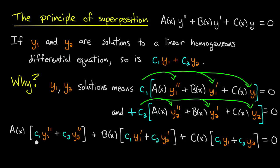So I'll have a times the linear combination of the second derivatives of y1 and y2, plus b times the linear combination of the first derivatives of y1 and y2, plus c times the linear combination of the no derivatives.